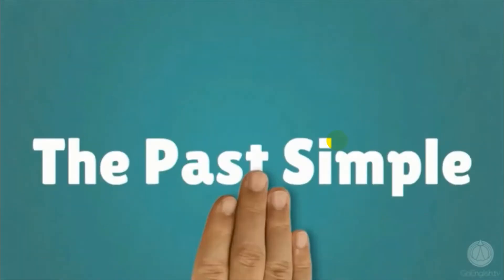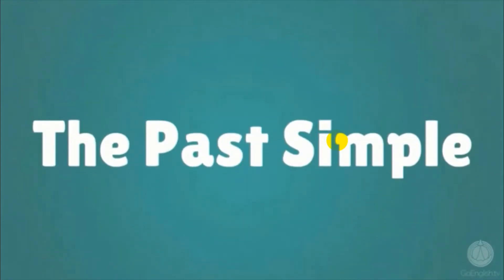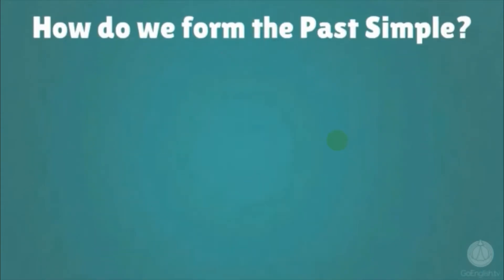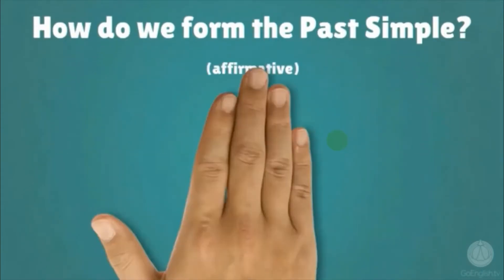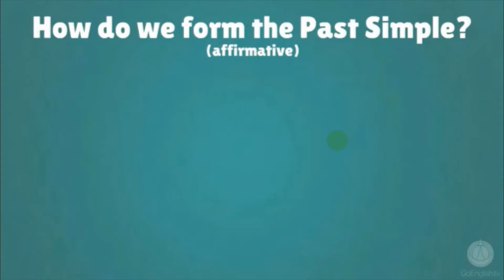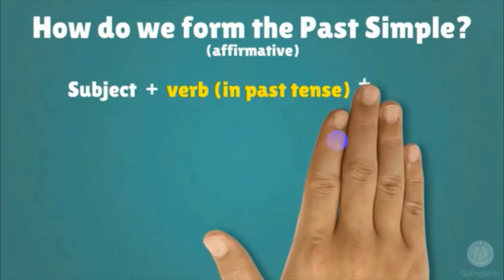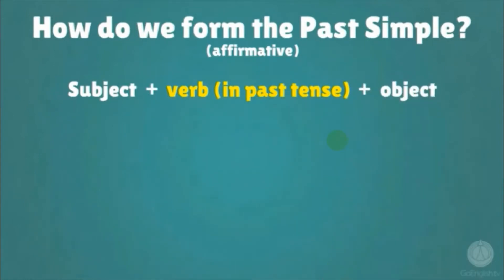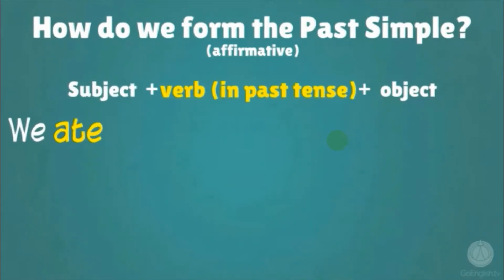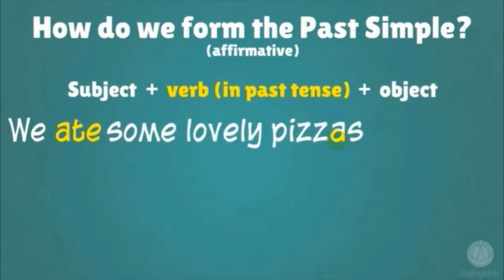The past simple. How do we form the past simple affirmative? Subject plus verb in past tense plus object. For example: We ate some lovely pizzas last night.